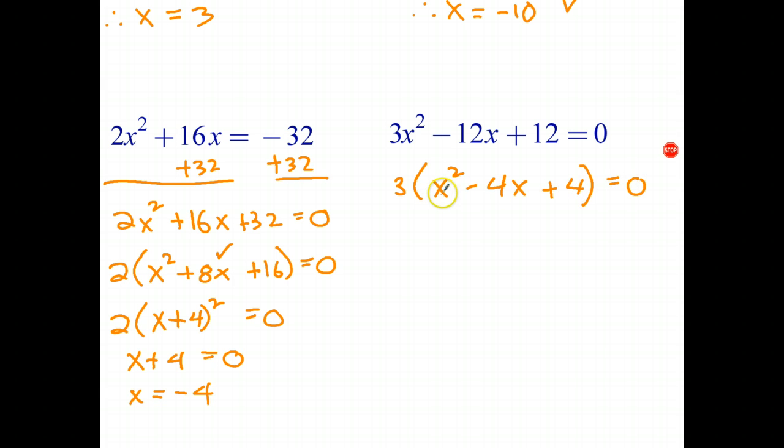Now, can that be written as a square of a difference? Well, let's have a look. a is equal to x, b is equal to two, since that's b squared. Two times x is 2x, times two is 4x. So it does fit the pattern.